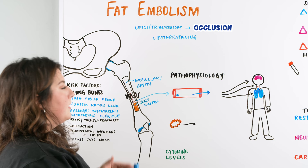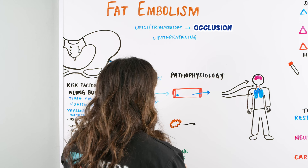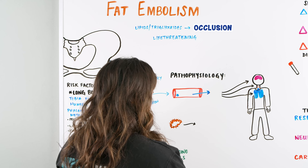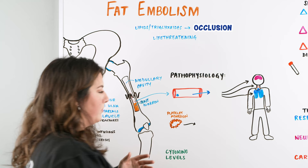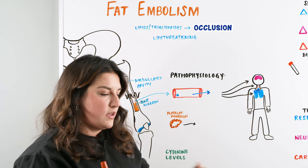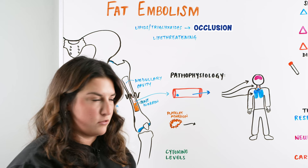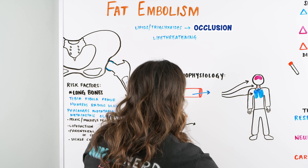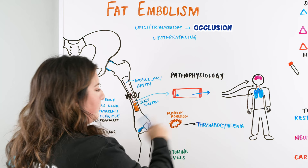Another problem in the pathophysiology is platelet adhesion. We have a fat globule and it starts to get platelets that adhere on the outside — platelet adhesion. It's taking all the platelets within our body and they adhere to the fat globule. You start thinking: if platelets are going to this fat globule, our platelet number is going to go down. If our platelet number goes down, that causes thrombocytopenia. Now we don't have the ready amount of platelets to be able to clot, so we're going to have an issue down the line.